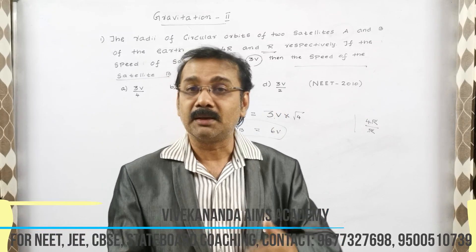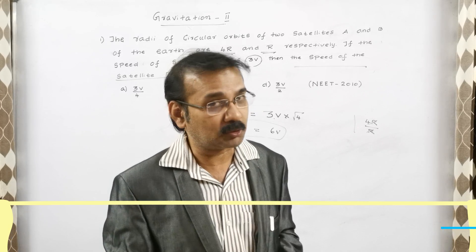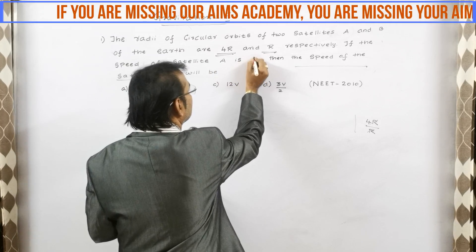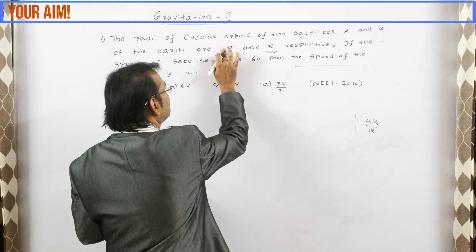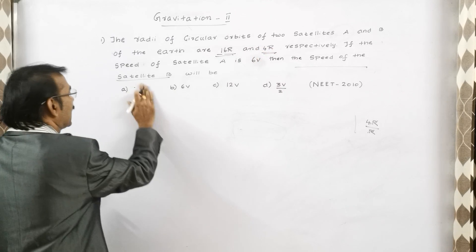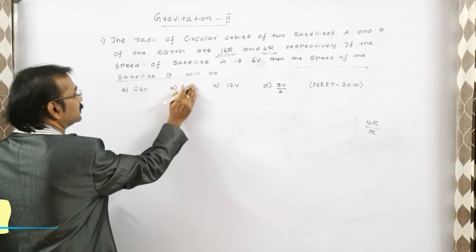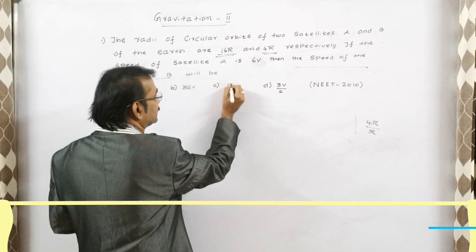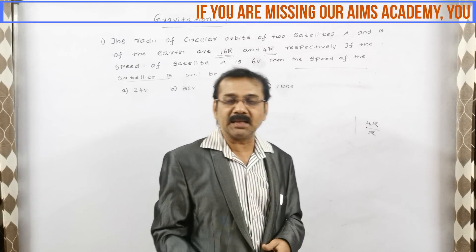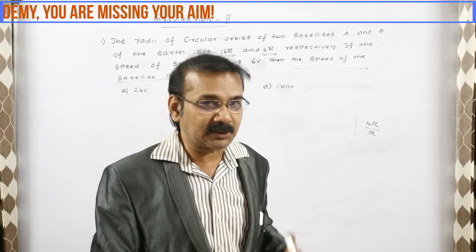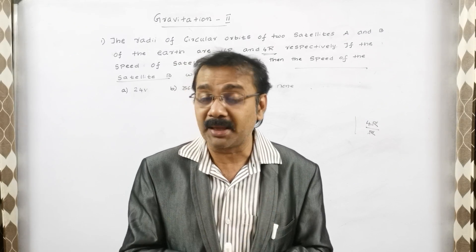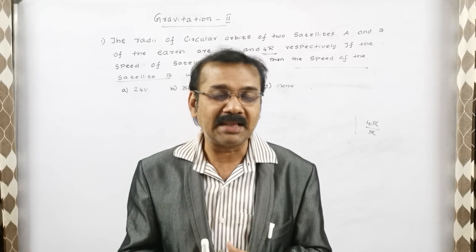I know you are expecting another model question, so here is one for your practice — please answer in my comment area immediately after seeing the question. This practice question was asked in the 2010 NEET exam. The options are 24 volt, 36 volt, 16 volt, and none of the above. Without using a pen, you can answer this in a fraction of a second — please give your answer in the comment area.